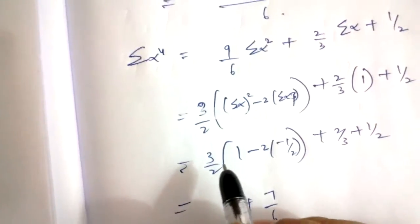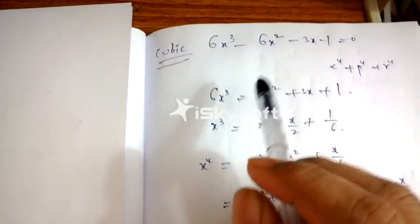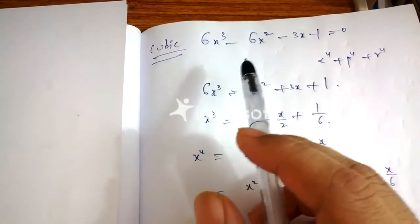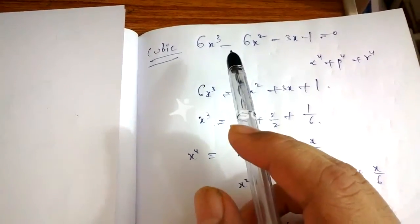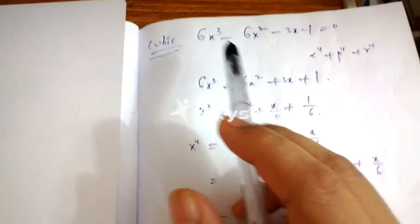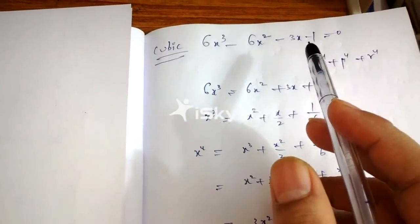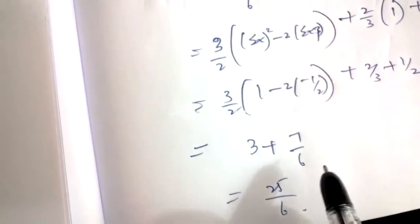So (2/3)·Σα = 2/3 × 1 = 2/3, plus 1/2. We have (3/2) × [(Σα)² − 2·Σαβ]. The sum of roots taken two at a time is c/a = −3/6 = −1/2. Remember the formulas: sum of roots is −b/a, sum of products taken two at a time is +c/a, and product of all three roots is −d/a — signs alternate. So Σαβ = −1/2, and −2 × (−1/2) = +1.